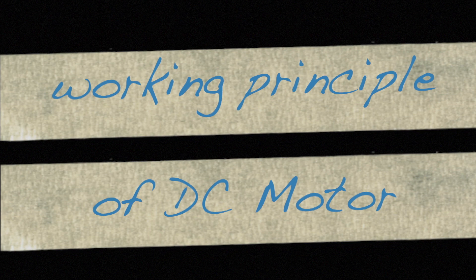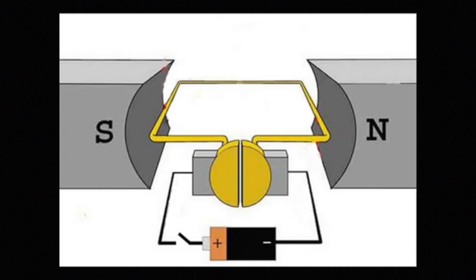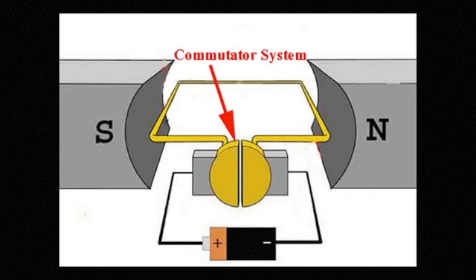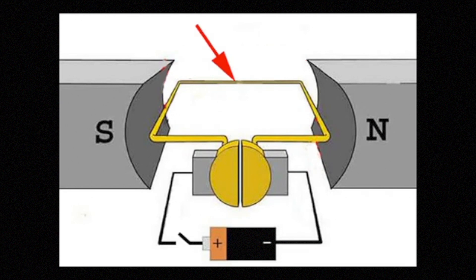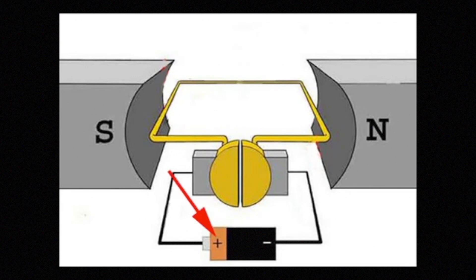To start learning about the mechanism of DC motor, let's start with the simplest DC motor possible. It contains a current carrying armature coil, connected to the supply of current through the commutator system — also known as split rings and carbon brushes. The armature coil is placed between the north and south pole of a magnet. The magnet can be permanent or an electromagnet. If we supply DC through the split ring, current will start to flow through the armature coil. The DC source is from the cell.